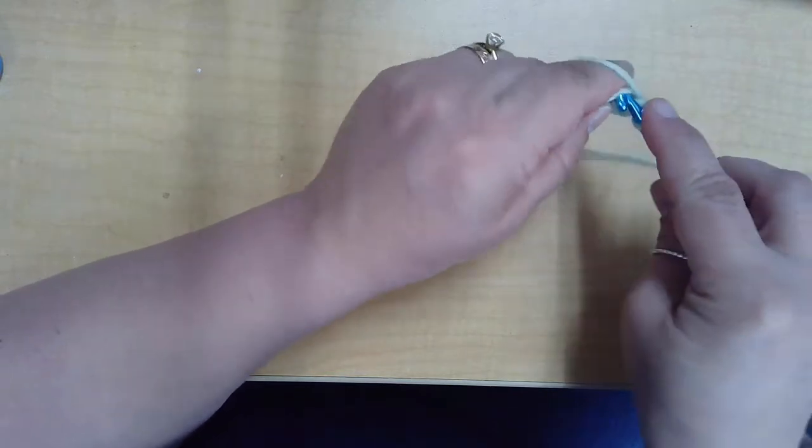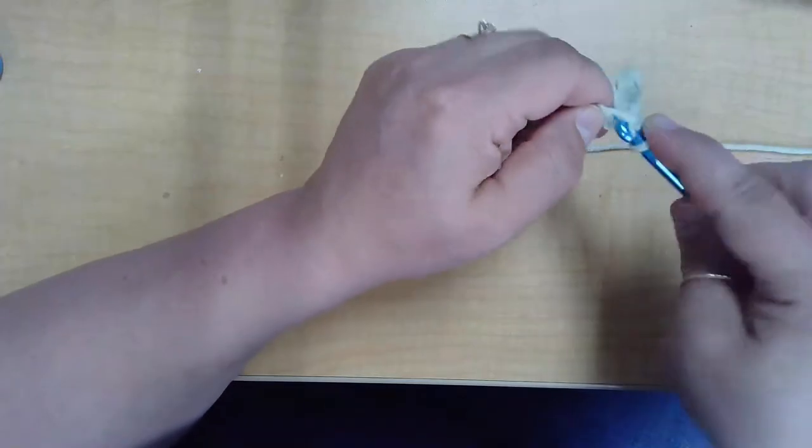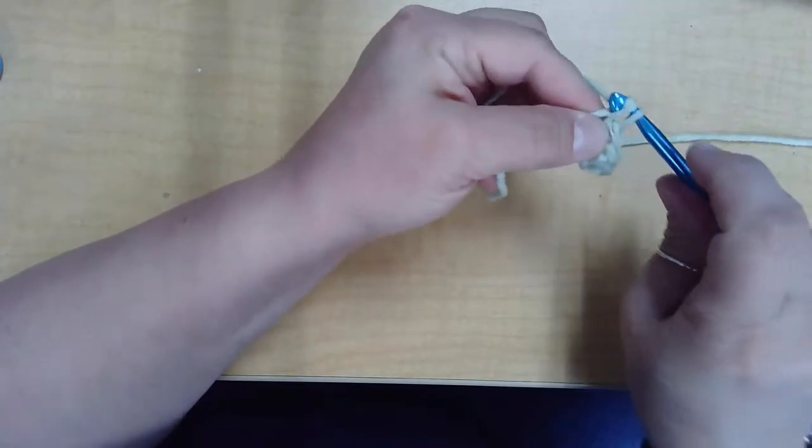All right, into the next space, yarn over, pull through, yarn over, pull through two loops.